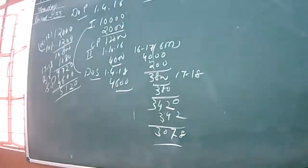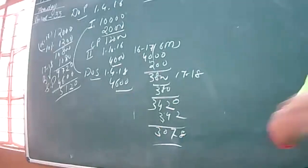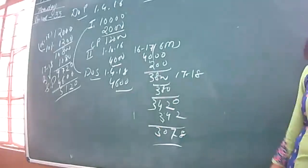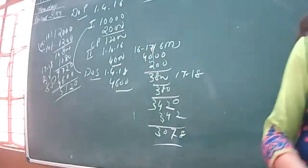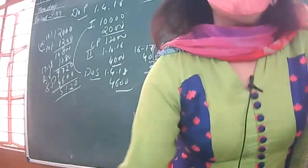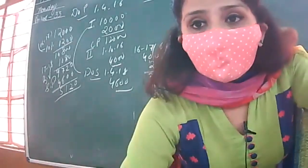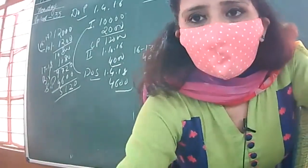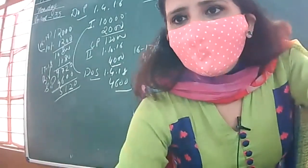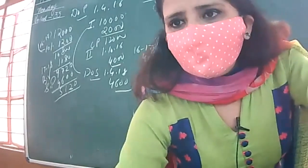3,078 will be the balancing figure of the machinery account after 3 years. The second machinery is kept for two and a half years, so you will find its balancing figure as 3,078. Now let's prepare the ledger account — again it's your turn. Prepare the ledger account everyone.